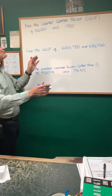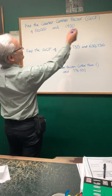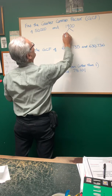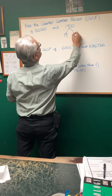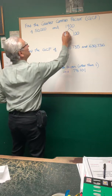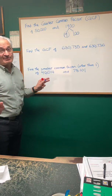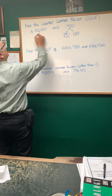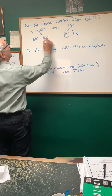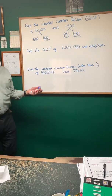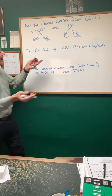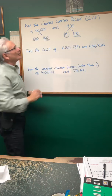At first this looks like an enormous problem — we would have to find the prime factorization of each. But notice that 19 is a prime number. If I were to break 1,900 down into the product of two smaller numbers, that's 19 times 100. 19 is not going to break down any further; it's a prime number. Look at 50,000 — that breaks down into 500 times 100. The largest number that's going to divide into both of those numbers is 100, so the GCF is 100.